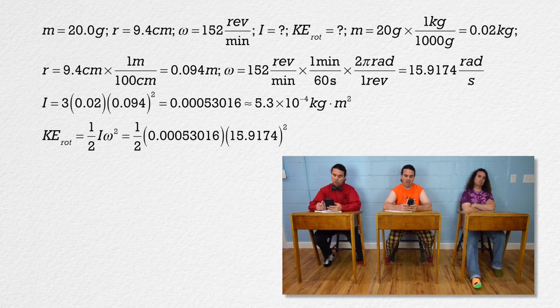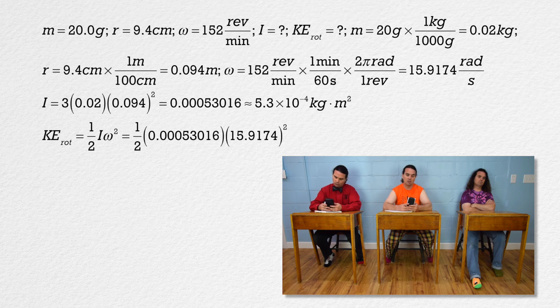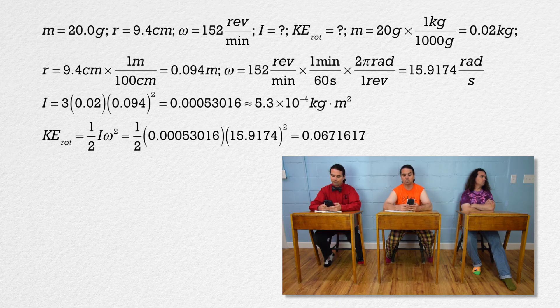Rotational kinetic energy equals 1 half times 0.00053016 times 15.9174 squared which is 0.0671617 or 6.7 times 10 to the negative 2 with two significant digits, joules.